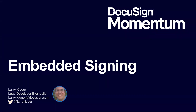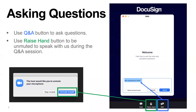Hello, everybody. I'm glad that you're here. My name is Larry Kluger. I'm the lead developer evangelist at DocuSign, and today we have a special webinar — a momentum talk on embedded signing. We're not all together in one room in a nice hotel in San Francisco or elsewhere, but instead we're all online, and we have the opportunity to ask questions.